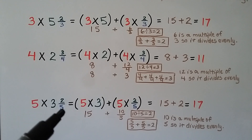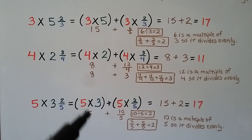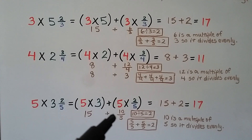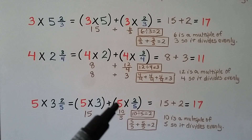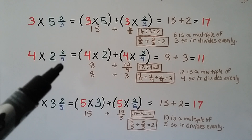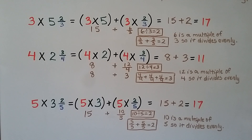Try it again: 5 times 3 and 2 fifths. We have a 5 and a 5 in the denominator, so the answer will be a whole number. We do 5 times 3, which is 15. Then 5 times 2 fifths: multiply 5 to the 2 numerator to get 10 fifths. 10 divided by 5 is 2. We have 15 plus 2, which is 17. The numerator 10 is a multiple of denominator 5, so it divides evenly. When the whole number is the same as the denominator, the product will be a whole number.